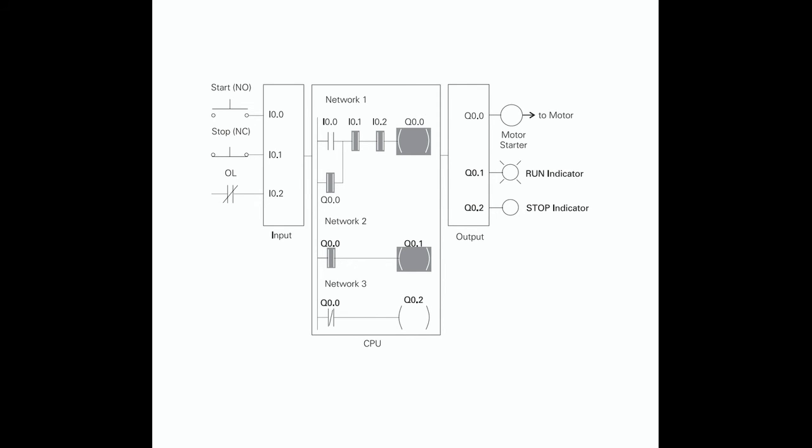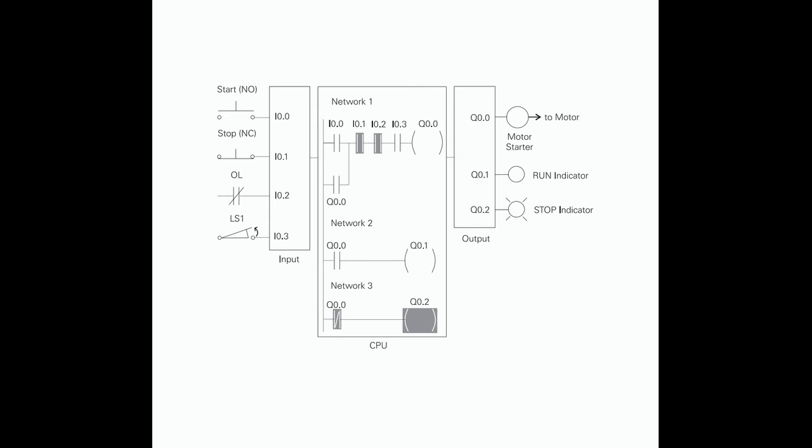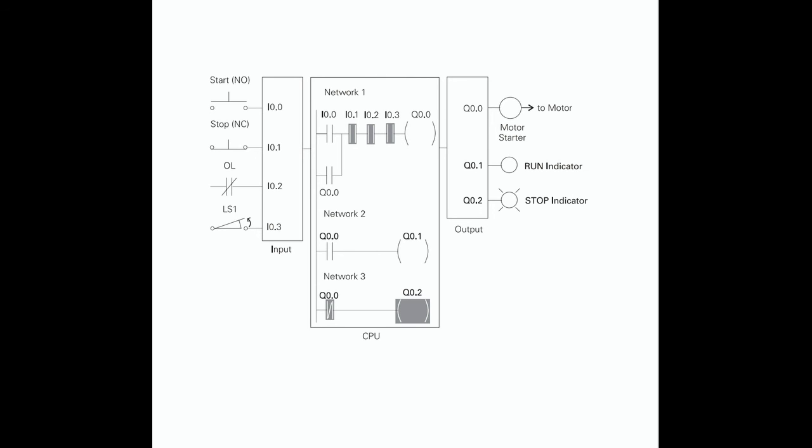Adding a Limit Switch: The application can be further expanded by adding a limit switch with normally open contacts to input I0.3. A limit switch could be used to stop the motor or prevent the motor from being started. An access door to the motor or its associated equipment is one example of a limit switch's use. If the access door is open, the normally open contacts of LS1 connected to input I0.3 are open and the motor will not start. When the access door is closed, the normally open contacts on the limit switch LS1 are closed, input I0.3 is now on (logic 1), and the motor will start when the start push button is pressed.